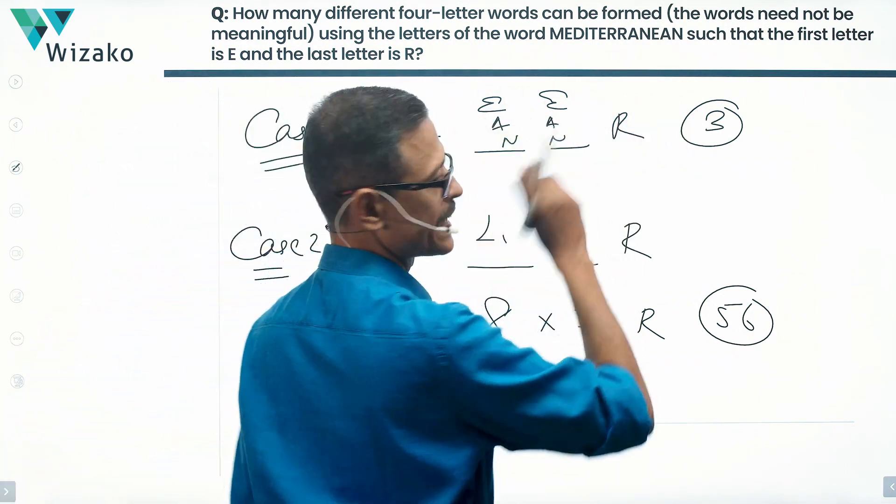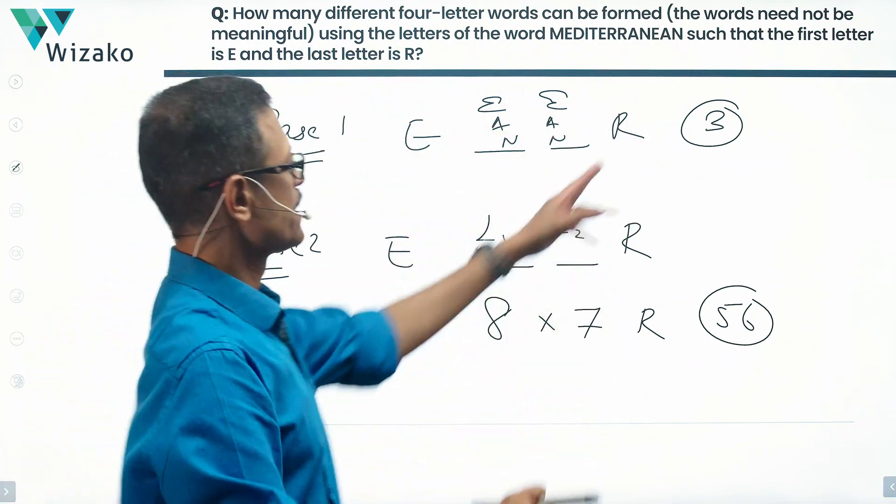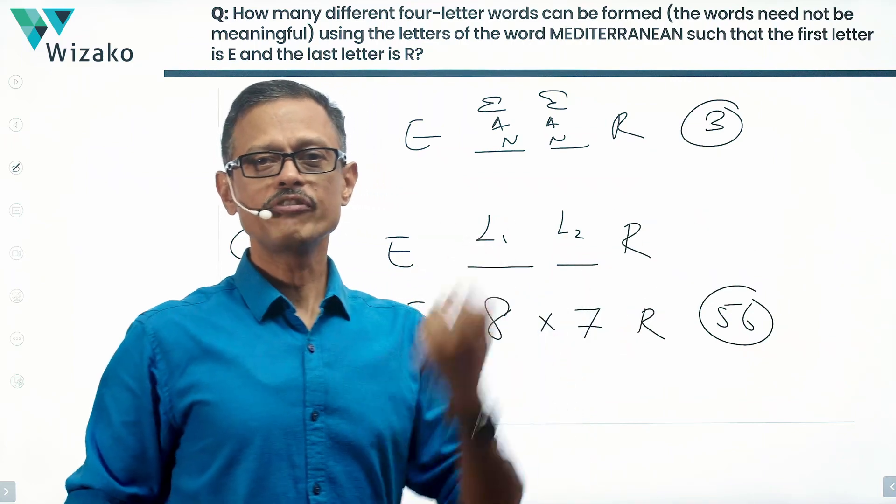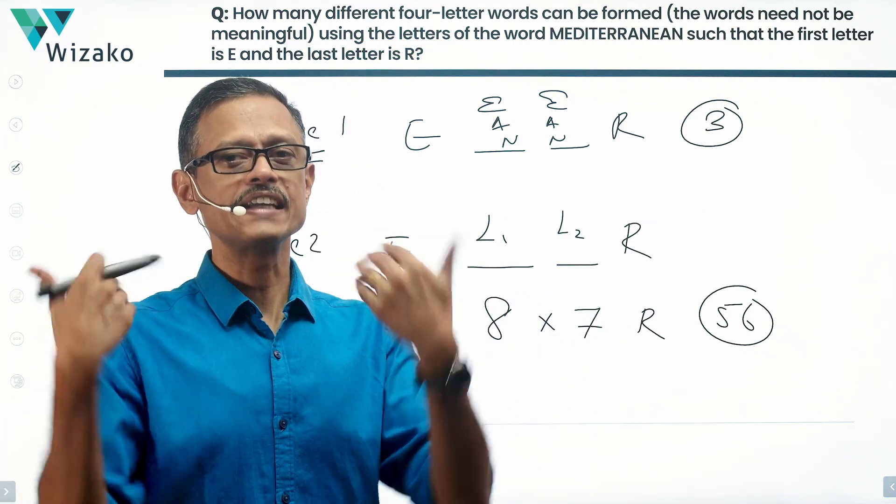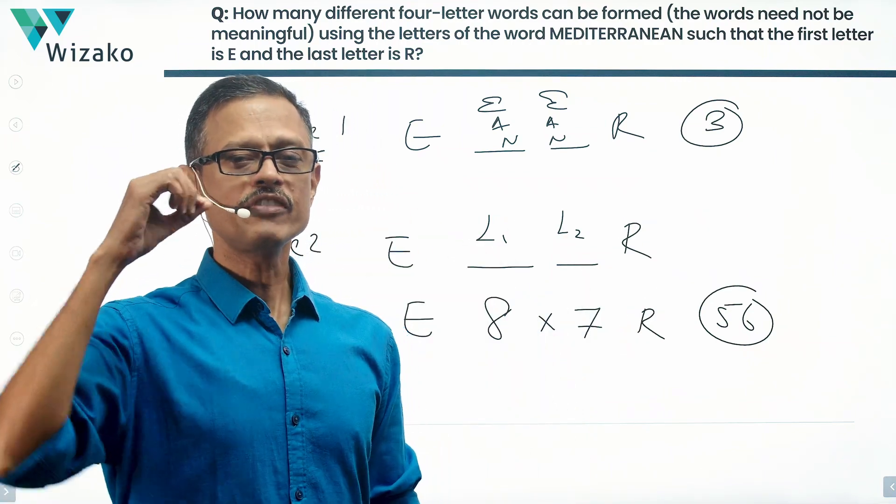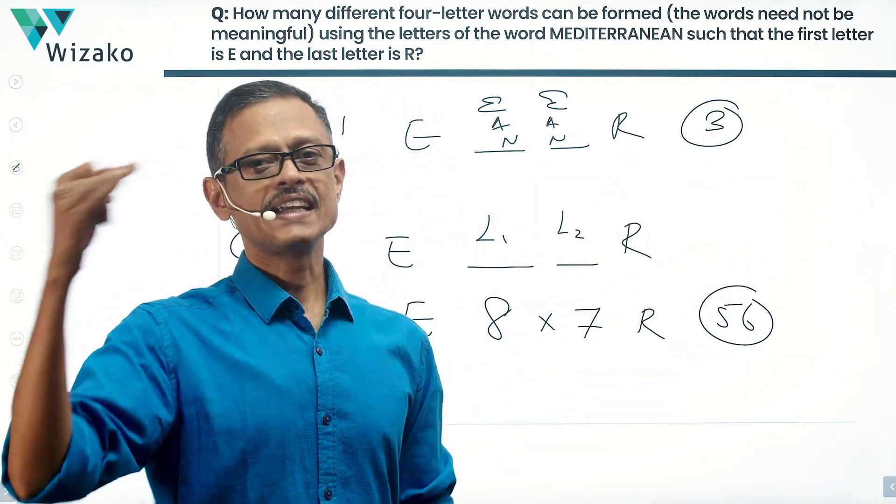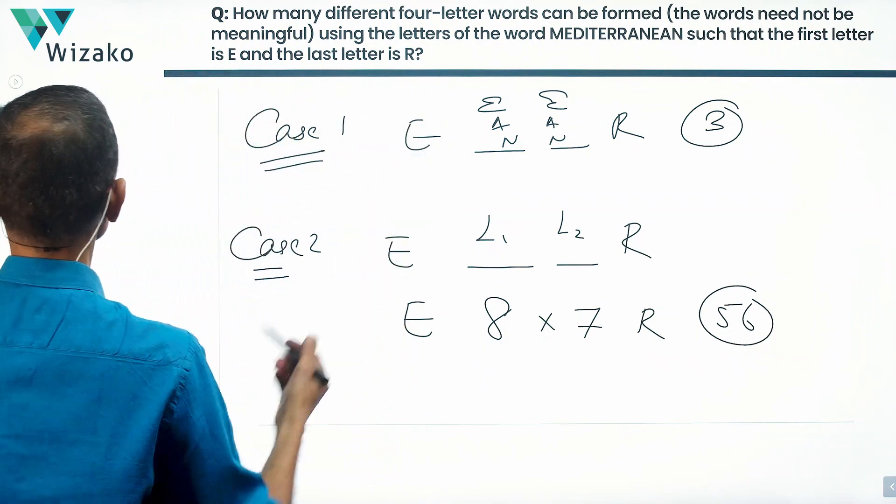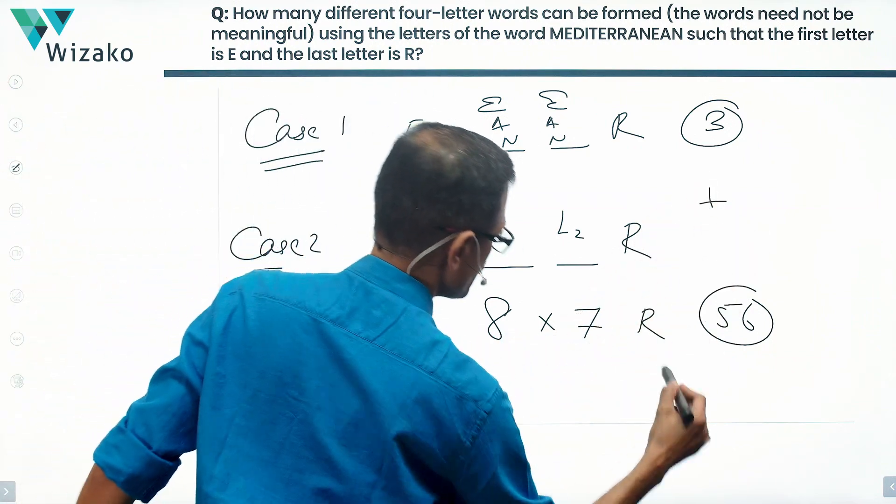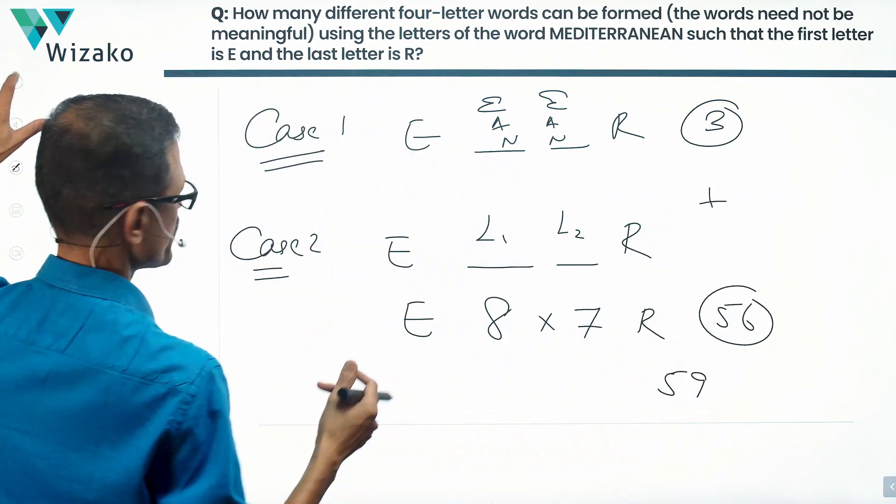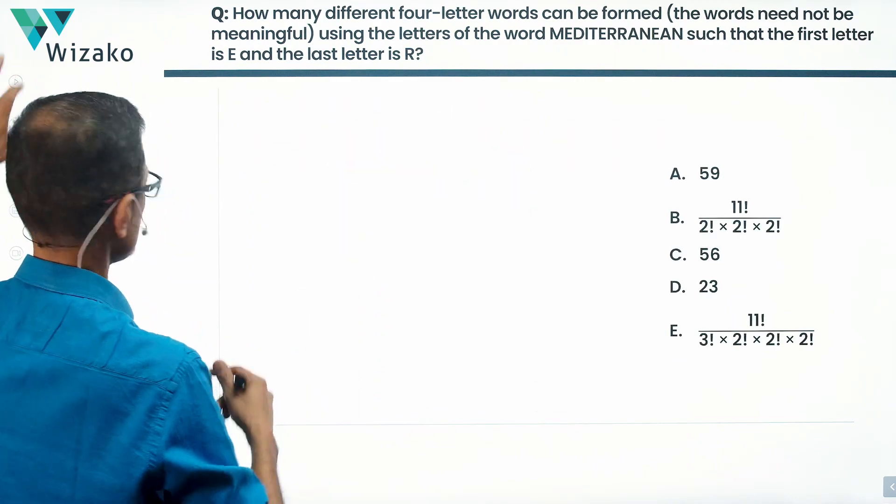The case where the two middle letters are the same - like E, E or A, A or N, N - that's three. So total, how many different rearrangements are possible? Three plus 56. We'll have 59 four-letter words which start with an E and end with an R from the letters of the word Mediterranean. Adding these two, 59 is the answer. Looking at the answer options, 59 is choice A.